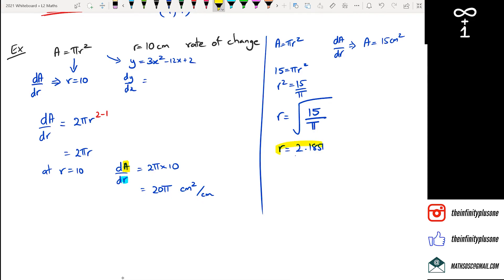So now what I would do is I would take this r here and I would actually substitute it instead of that 10. Might as well do it because it's not really that much extra work. Because we know what dA/dr was. dA/dr was 2πr. So in this case we're going to get 2π times 2.1851. So that should give us 4.3702π centimeters squared per centimeter.